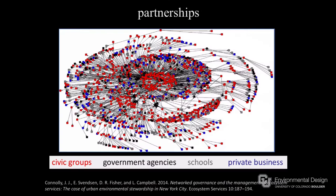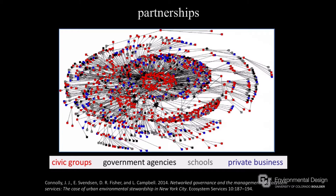Another way to look at scaling up is through a social network map. The U.S. Forest Service Urban Field Station in New York City — Erica Svensson and colleagues — cataloged all the environmental stewardship organizations in New York City and found over 2,000. They did a social network map showing who's communicating with whom and who's getting resources from whom. The red nodes are civic groups — community gardens and friends-of-parks groups — and being part of these governance partnerships or network governance allows them to play a larger role.